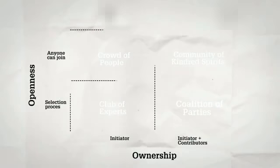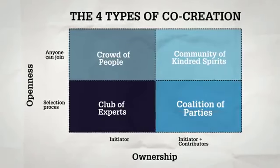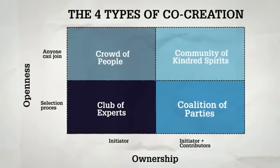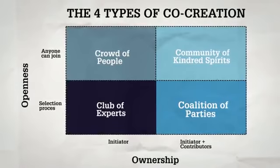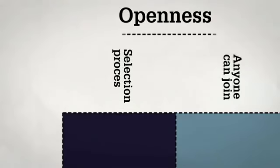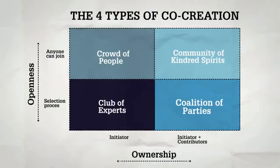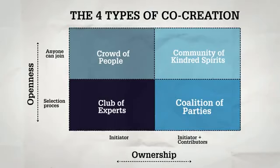There are four main types of co-creation, each with their own characteristics and reasons to be. They're defined by two dimensions. There is openness — who gets to take part, can anyone join, or is there a selection process? And ownership — who owns the outcome, is it just the initiator, or does everybody share?